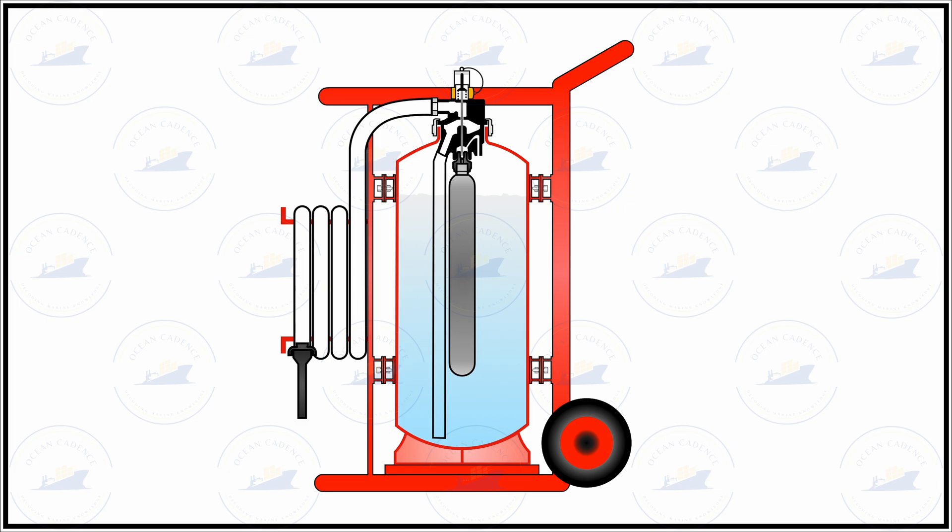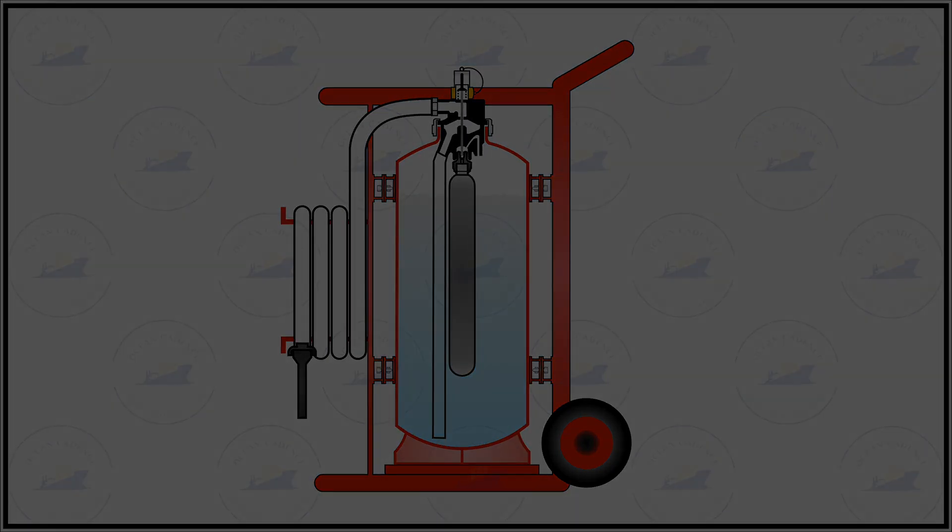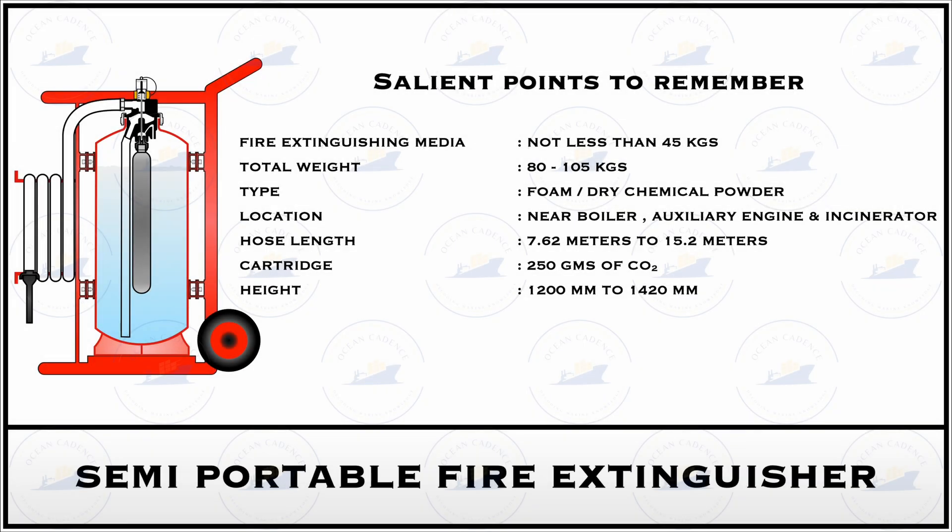Now speaking about the technical details of the semi-portable fire extinguisher which differ from the portable fire extinguisher, it is important to understand that the semi-portable fire extinguisher should not be less than 45 kg in the extinguishing media size whereas the total weight can go up to 85 to 105 kg as well. That is the entire media as well as the other entablature weight being included.